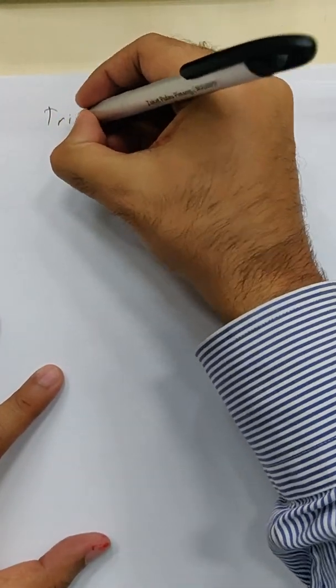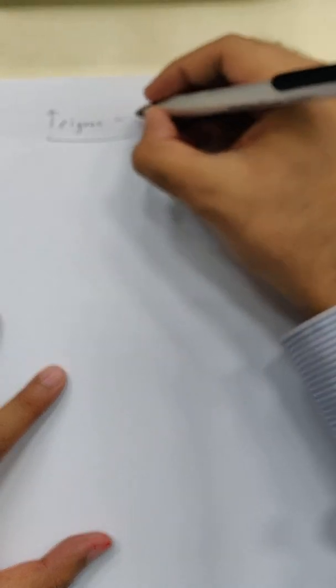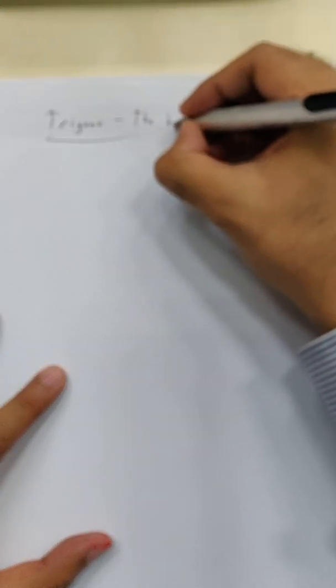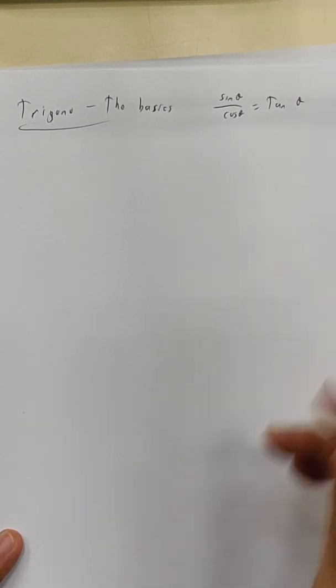Okay, so trigonometry, let's try. Okay, the basics will be something like this. Sine theta divided by cos theta, what do you get? Tangent theta. Those are basics.